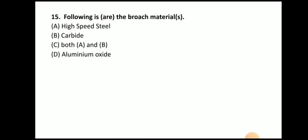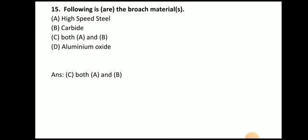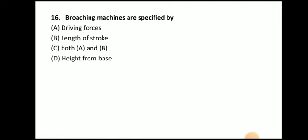Next question: what are the broach materials — high speed steel, carbide, both, or aluminum oxide? The answer is both — the broach is either made of high speed steel or carbide material.